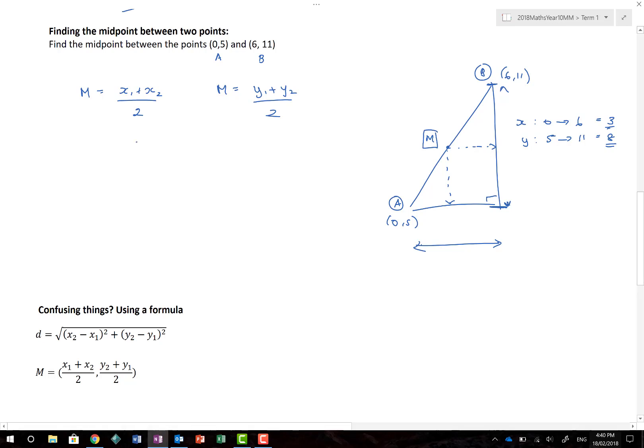So, if I have 0,5 and 6,11, what do we do? 0 plus 6 divided by 2. Oop, let's not get rid of that bracket. And my Y value is 5 plus 11 divided by 2. So, that would be 3 comma 4. Job done. So, the midpoint between two points, add these two together, halve it, add these two together, halve it.